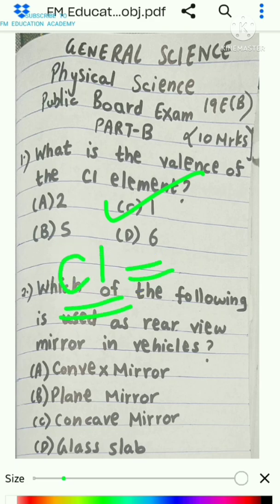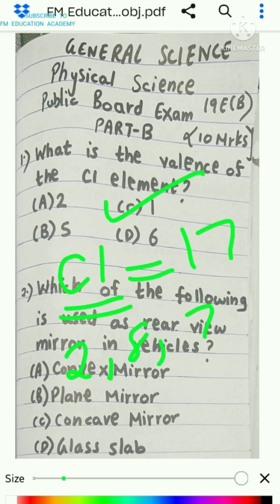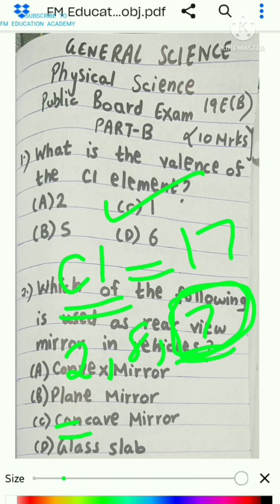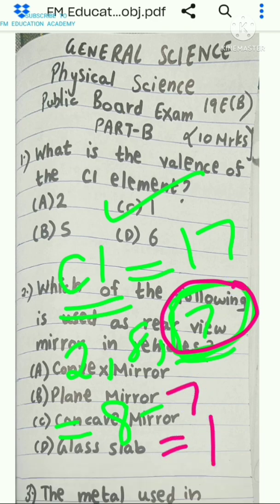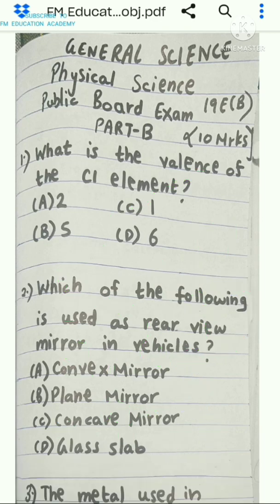To recap: chlorine's atomic number is 17, written as 2, 8, and 7. There are 7 valence electrons in the outermost shell. The formula to calculate valency is 8 minus number of valence electrons, so 8 minus 7 equals 1. The answer is option C, which is 1.